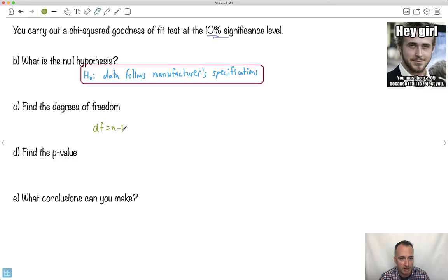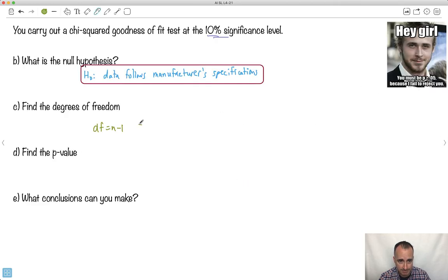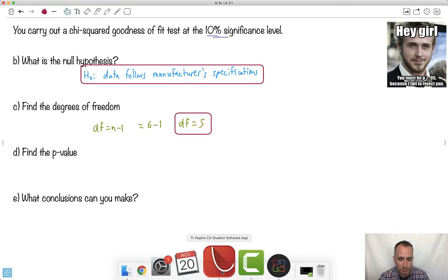What's n? How many values are there? There's 1, 2, 3, 4, 5, 6 different values. So it's going to be 6 minus 1, so the degrees of freedom equals 5. Do you see how this actually isn't so bad? You just got to learn a few little tricks. P value, how do I do that? I got to do this test in my calculator. So now let's go ahead and put all this in my calculator.